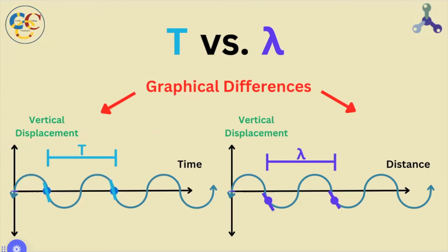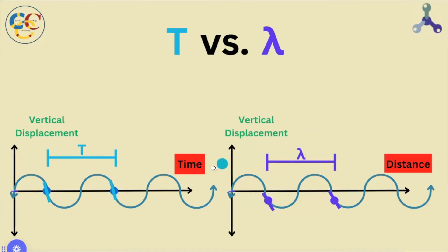Still, there are blatant differences between the graphs we use to measure these different variables. For example, our period graph is measured against time, whereas our wavelength graph is measured via distance.